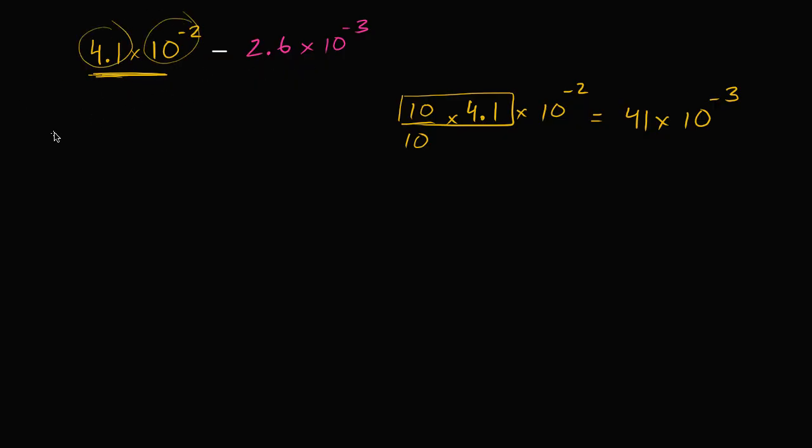So let's rewrite this. We can rewrite it now as 41 times 10 to the negative 3 minus 2.6 times 10 to the negative 3. So now we have two things. We have 41, 10 to the negative 3's, minus 2.6, 10 to the negative 3's.